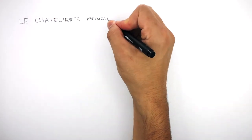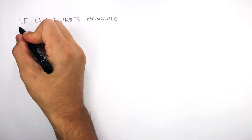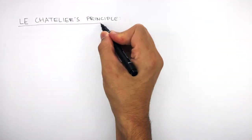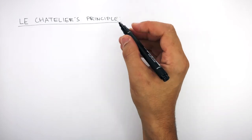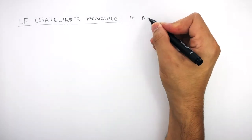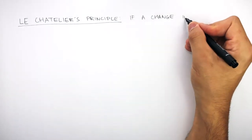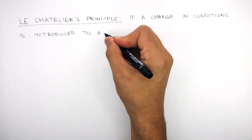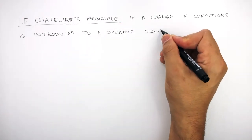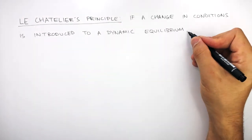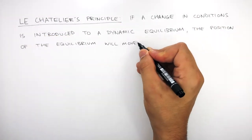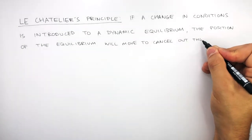We can use Le Châtelier's principle to explain why this has happened. Le Châtelier's principle states that if a change in conditions is introduced to a dynamic equilibrium, the position of the equilibrium will move to cancel out the change.